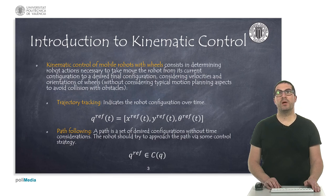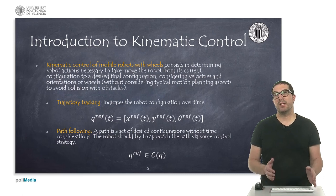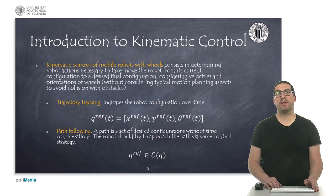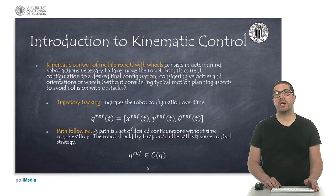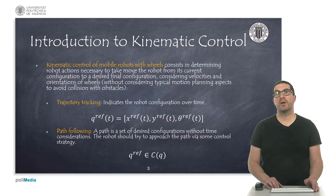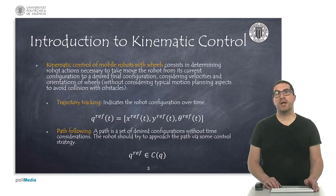The ultimate goal is to determine a set of control actions — that is, wheel speeds — that allow the robot to reach a final configuration from an initial configuration. In kinematic control, aspects such as obstacle avoidance are not considered; that is a task typically considered in motion planning algorithms. There are two classic approaches: trajectory tracking and path following.